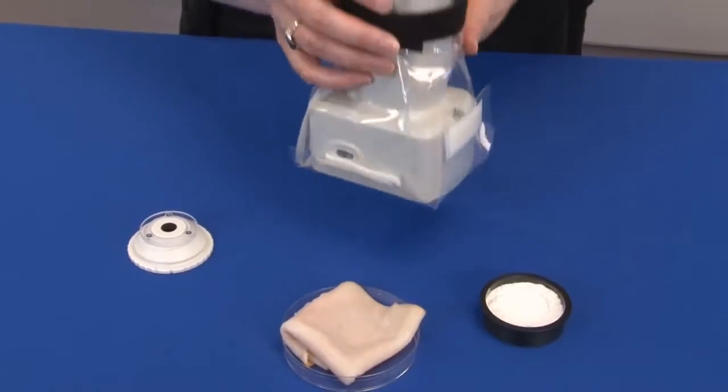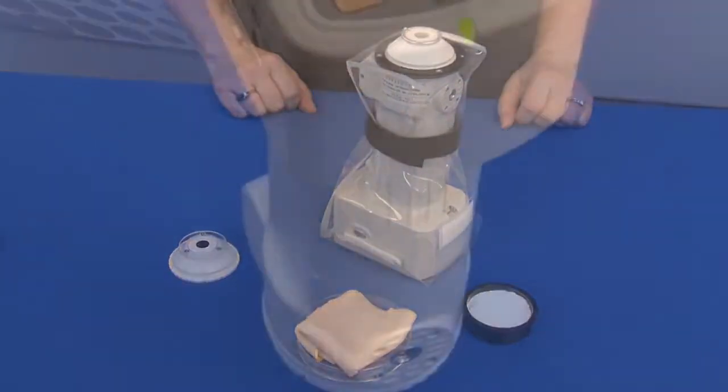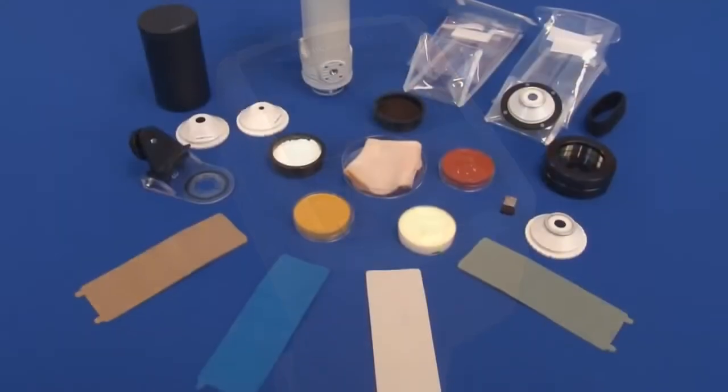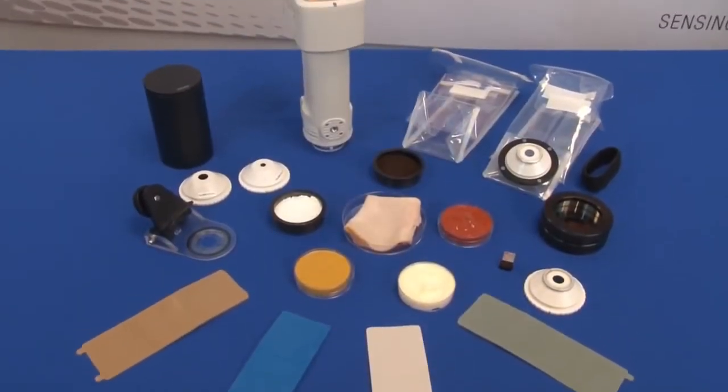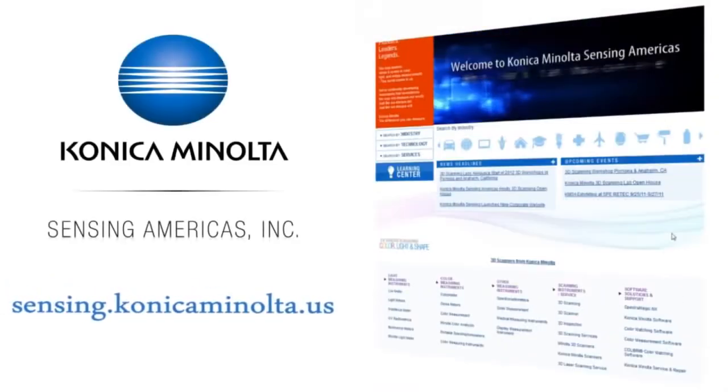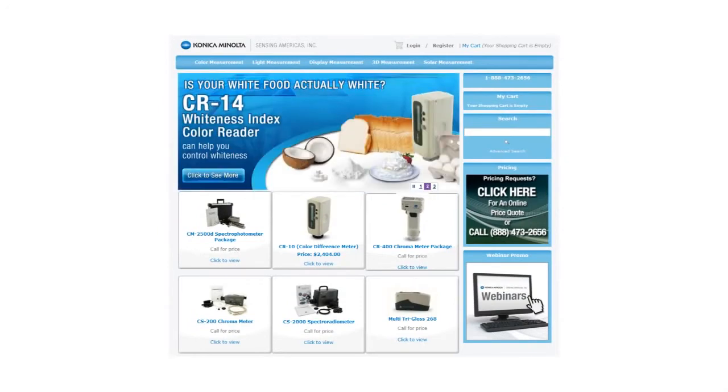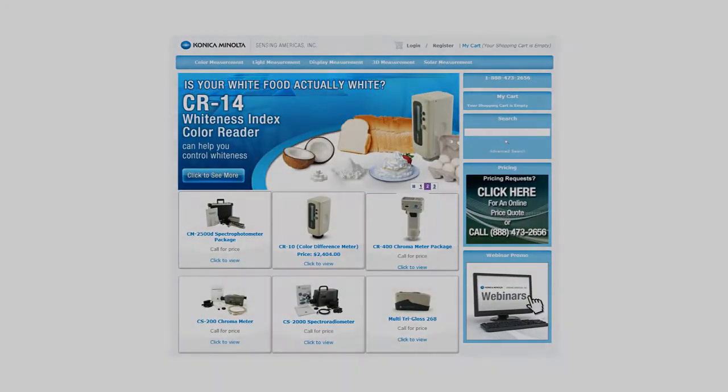Accessories are simple additions to your color measurement instrument for unique applications. For more information on Konica Minolta's Color and Appearance product line and accessories, please visit us online at sensing.konicaminolta.us or shop directly at shopkmsa.com.